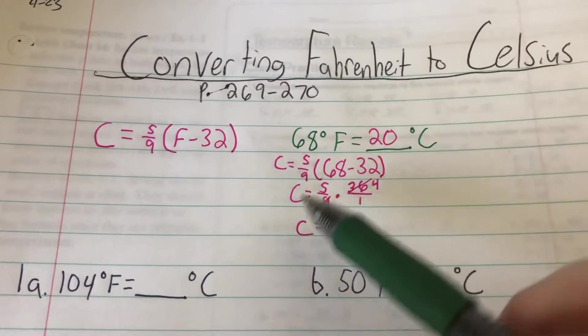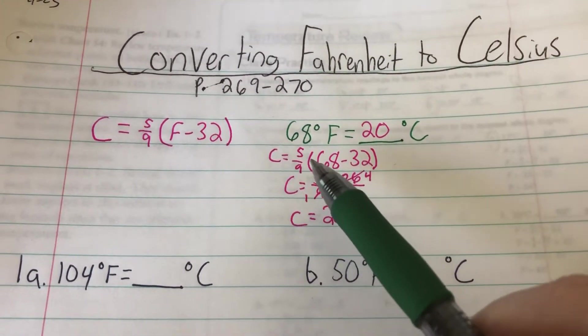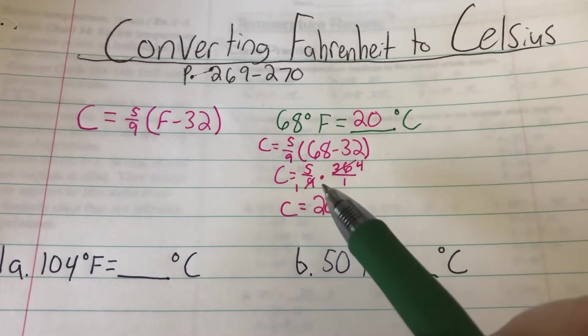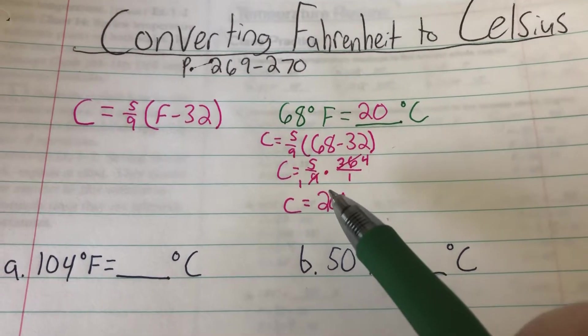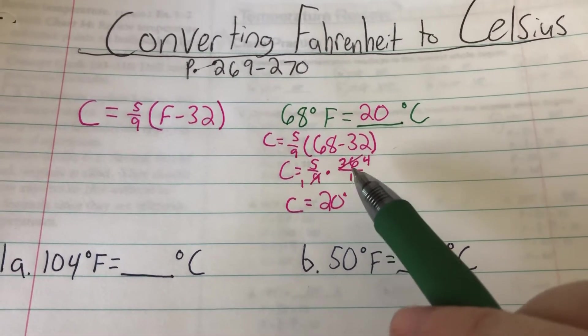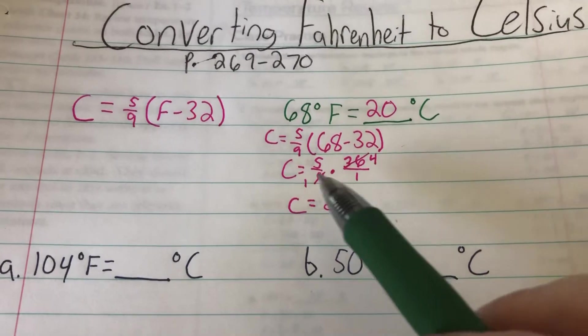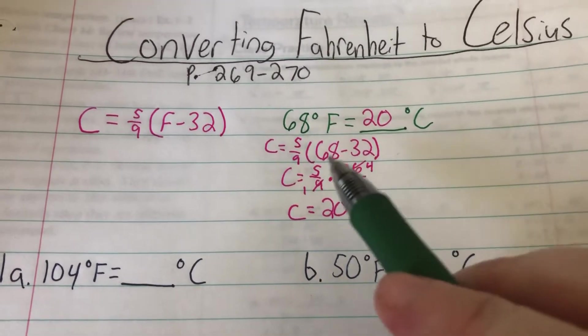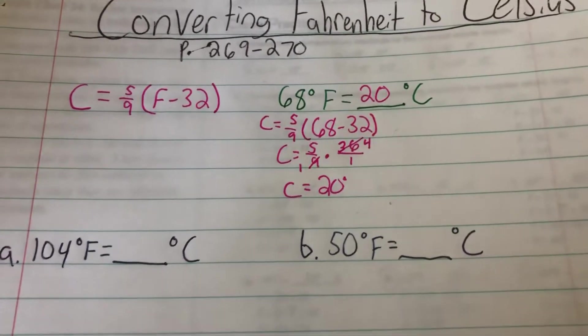So if it was 68, we would start with 5/9 times 68 minus 32. 68 minus 32 is 36, and we multiply 5/9 times 36 over 1. We can reduce that 9 and 36 to 1 and 4, and then 5 times 4 would be 20. So it would be 20 degrees Celsius.